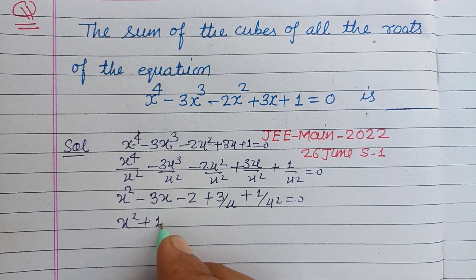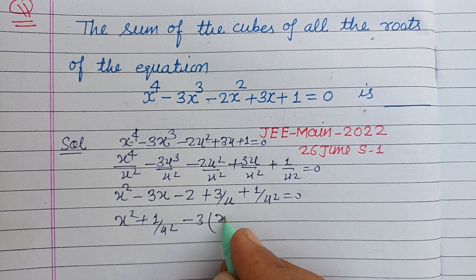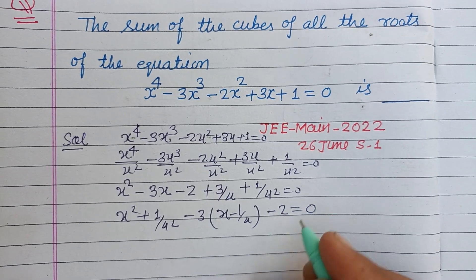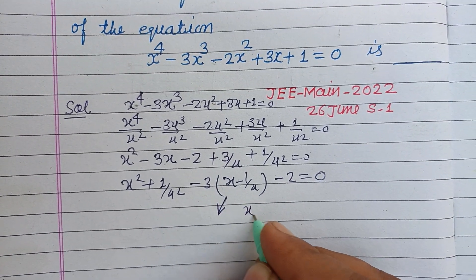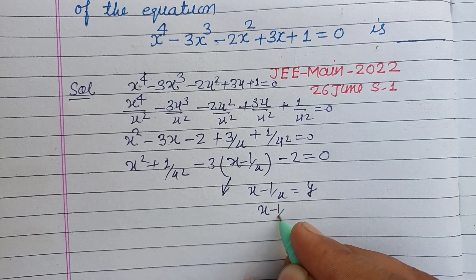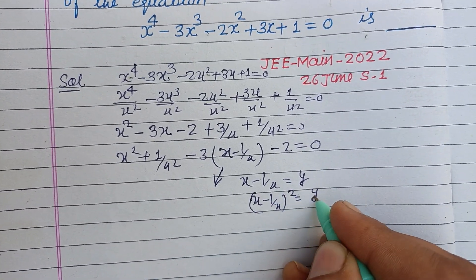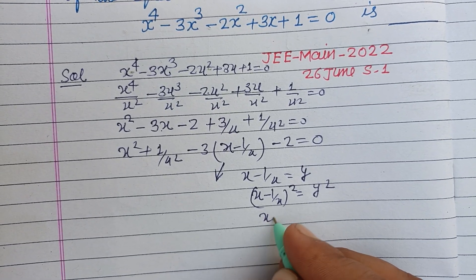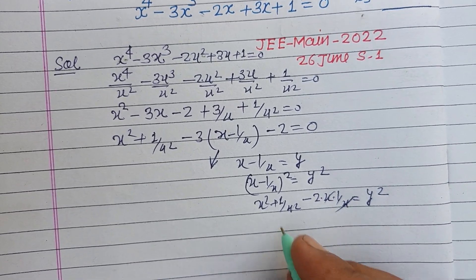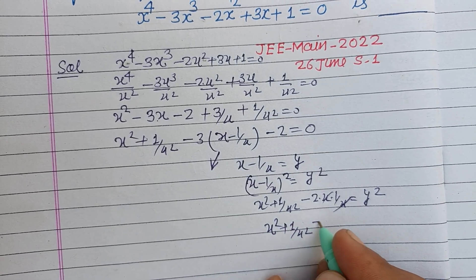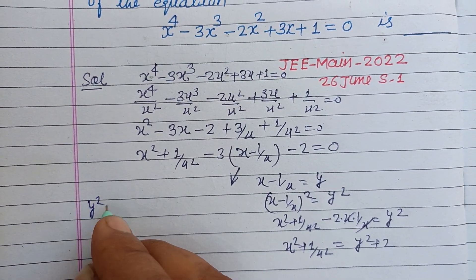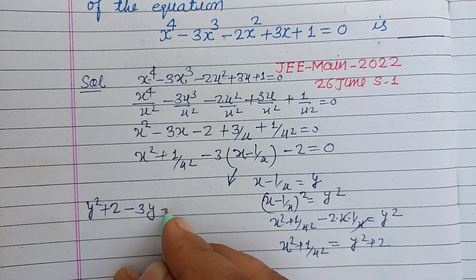We group terms as x squared plus 1 upon x squared minus 3 times x minus 1 upon x minus 2 equal to 0. Let y equal x minus 1 upon x. Squaring both sides gives x squared plus 1 upon x squared equal to y squared plus 2. The equation becomes y squared plus 2 minus 3y minus 2 equal to 0.